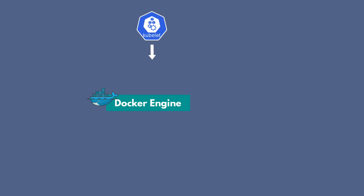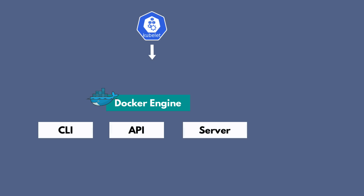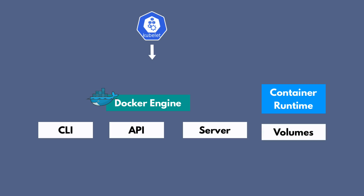Let's say we deploy Docker engine on a Kubernetes worker node. Docker engine actually comes with three components: Docker server, the Docker API for interacting with the server, and the command line interface — the Docker commands that you can execute against the server. The Docker server component itself has a couple of components and features: the container runtime, which is responsible for starting and stopping containers and managing the whole lifecycle; the volumes part for persisting data; the network interface for Docker containers; and also the ability to build images with Docker.